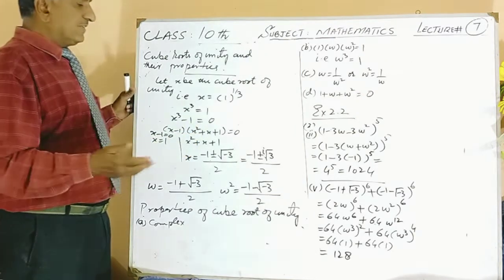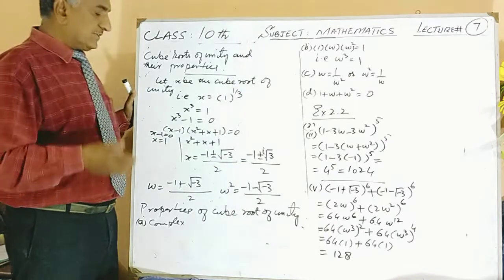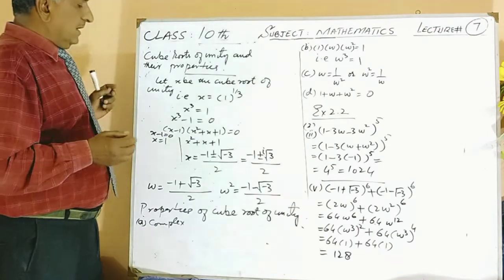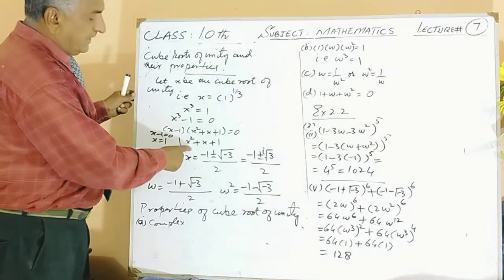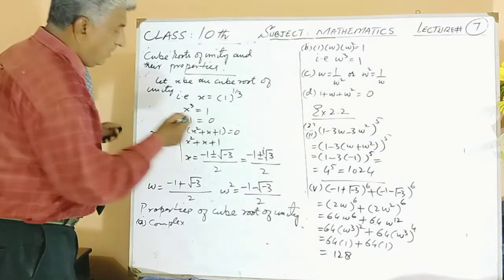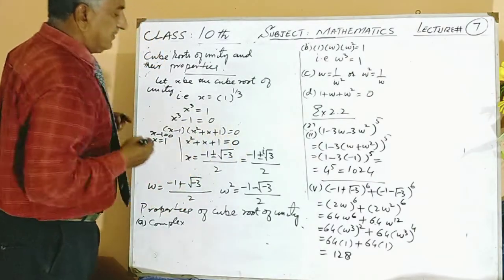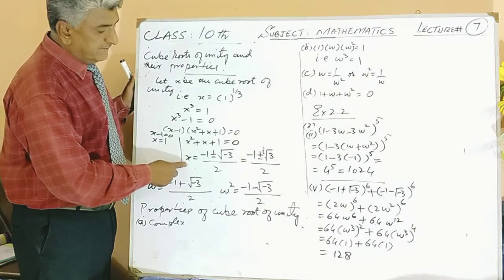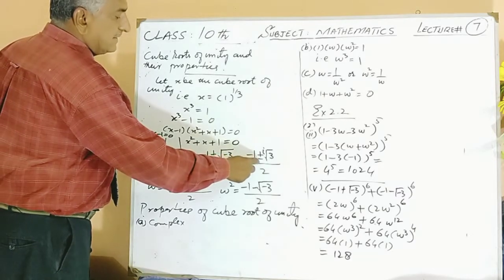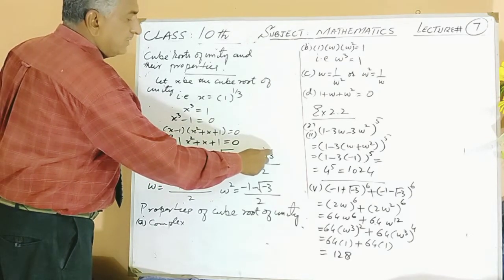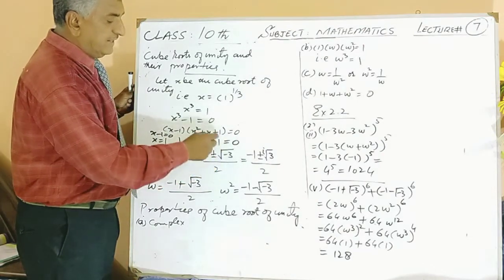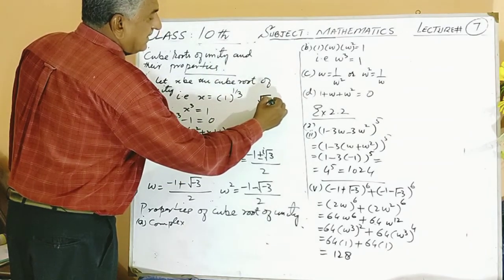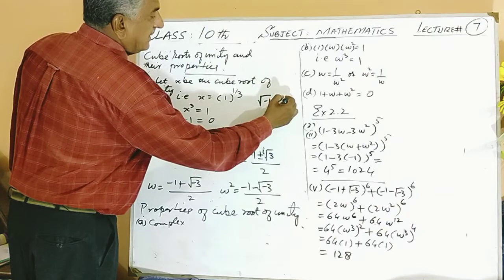In previous lectures, in chapter 1, we discussed the solution by quadratic formula in a comprehensive way, in detail. After using the quadratic formula in this equation, you will get the values of x, that is, minus 1 plus or minus iota root 3. This was minus 3 within the square root, and you know that square root of minus 1 is equal to iota.